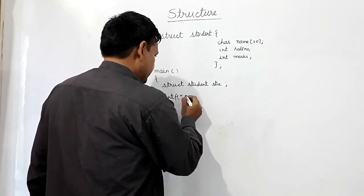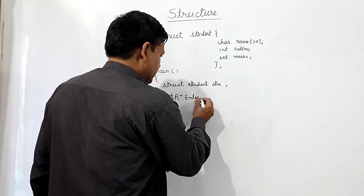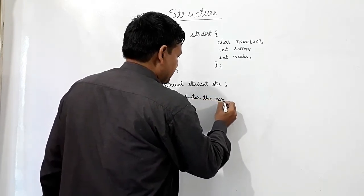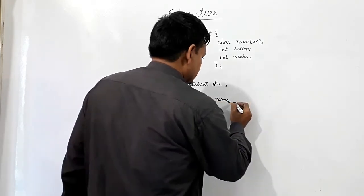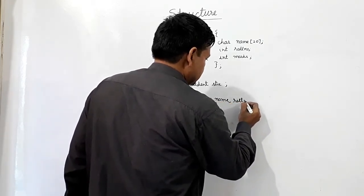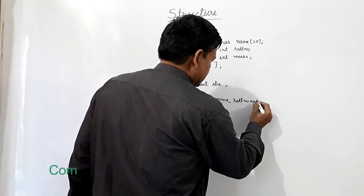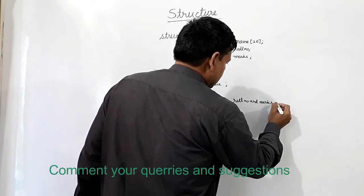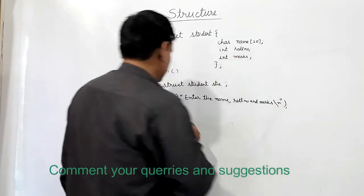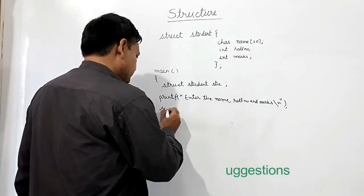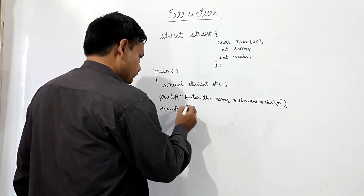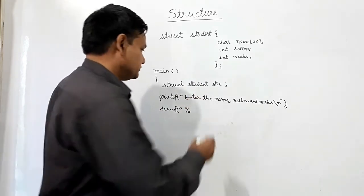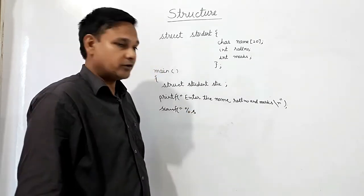Then printf, enter name, role number, and marks. Then scanf, name - it is a string.